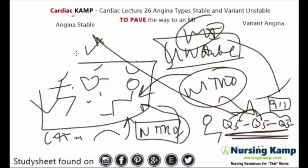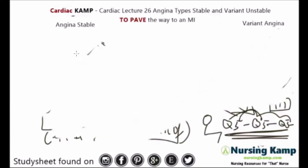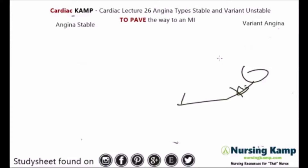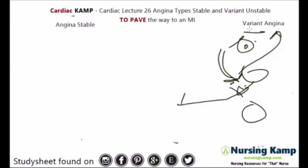The next type is variant angina, which is a little different from stable angina. With variant angina, the patient is sleeping at night and a vasospasm in the vessels causes chest pain. It's very characteristic — occurring while sleeping. It's also called Prinzmetal angina.